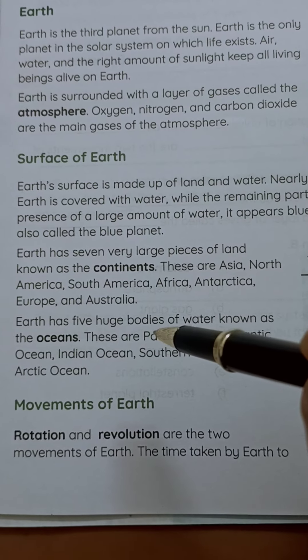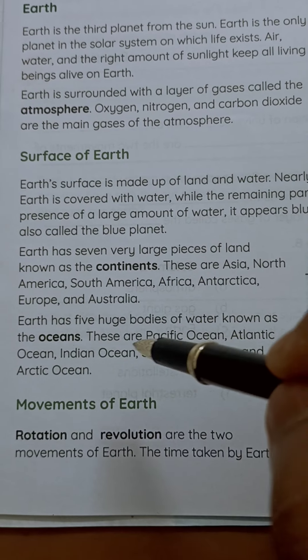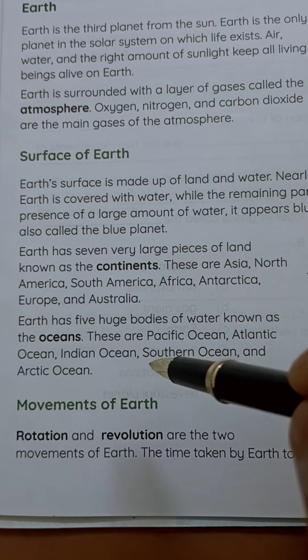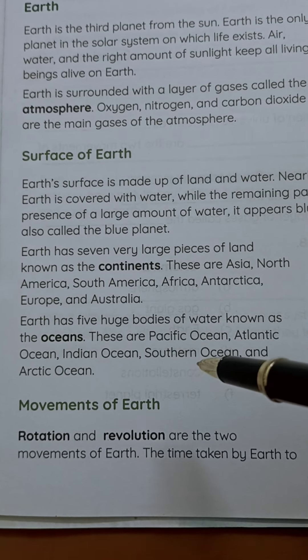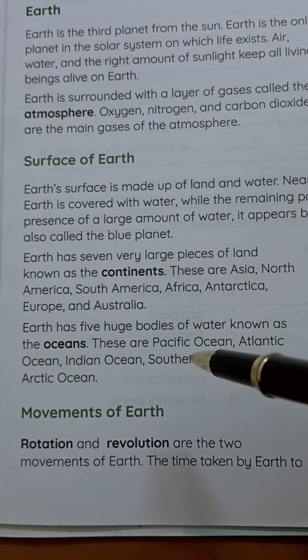Earth has five huge bodies of water, known as the oceans. These are the Pacific Ocean, Atlantic Ocean, Indian Ocean, Southern Ocean, and Arctic Ocean.